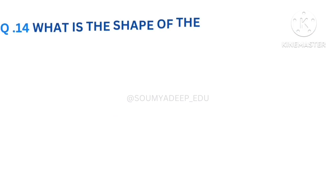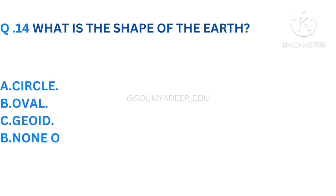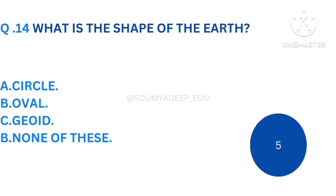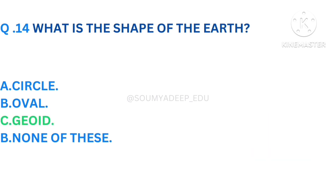What is the shape of the earth? The options are circle, oval, oblate spheroid. Your time starts now. The answer is oblate spheroid. Let's move to the last question of the video.